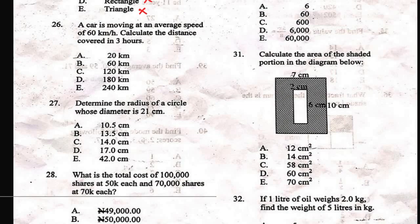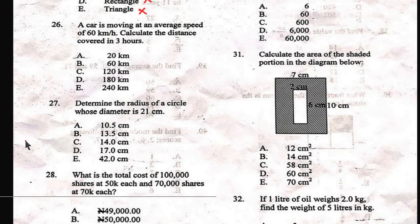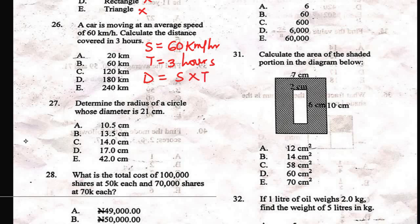Question 26 says: a car is moving at an average speed of 60 km per hour. Calculate the distance covered in 3 hours. The formula for calculating distance is D equals speed times time. To get the distance, we multiply the speed, which is 60 km/h, by the time, which is 3. Our answer will be 180 km. D is the correct answer.